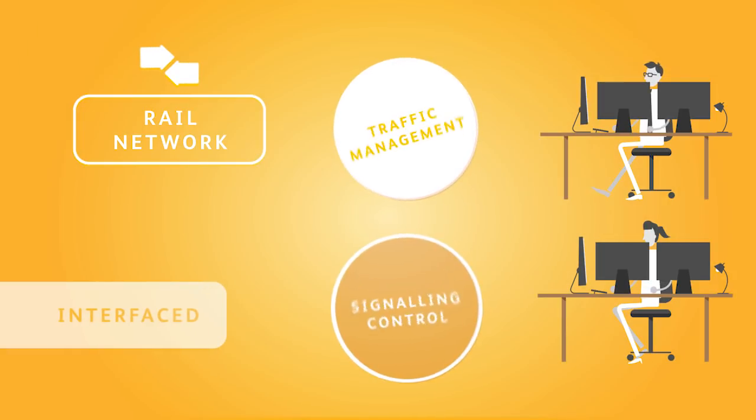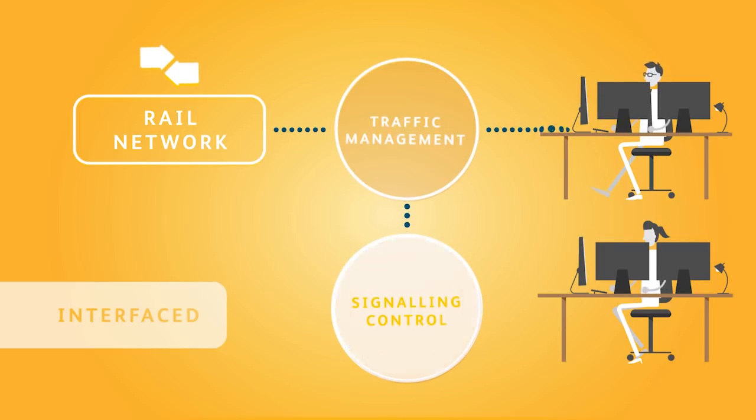In contrast, an Interfaced TM is linked to the signal control system through some form of automatic route setting. Using this system, the operator can choose a new plan, which can be implemented directly into the signal control system.